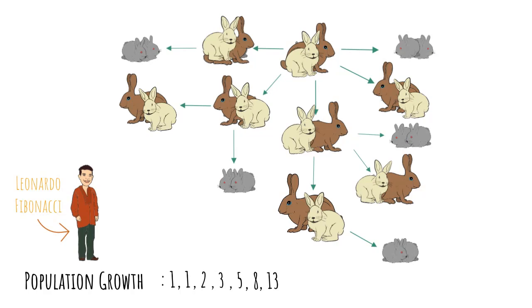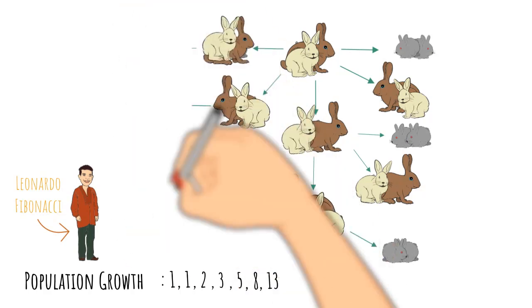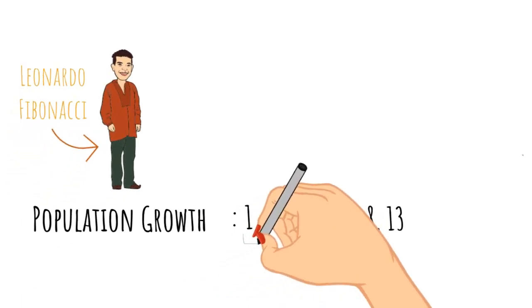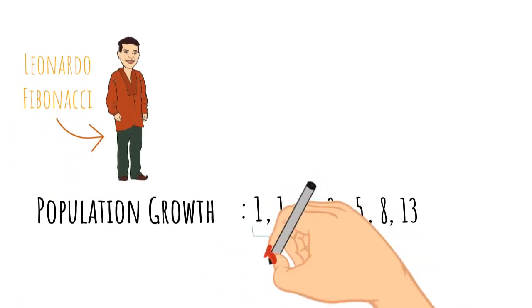I'm going to save myself the headache of drawing any more out because we can actually just evaluate the next term in the sequence by looking at the previous terms. Because the first two terms, one plus one, make two, my next term. And then the next two terms, one and two, make three, which is the next term.